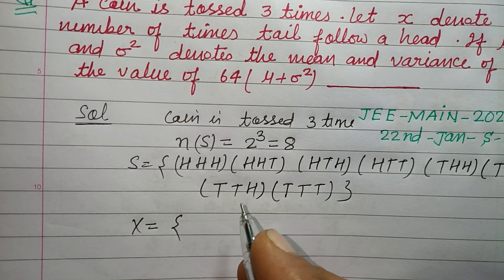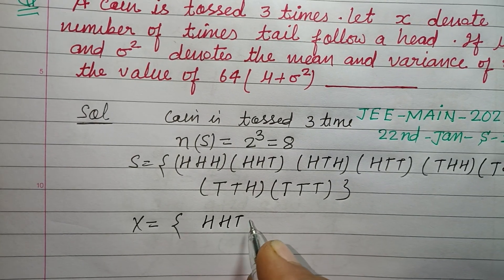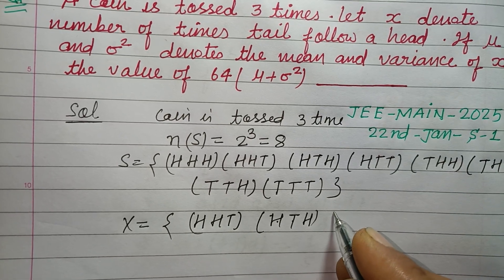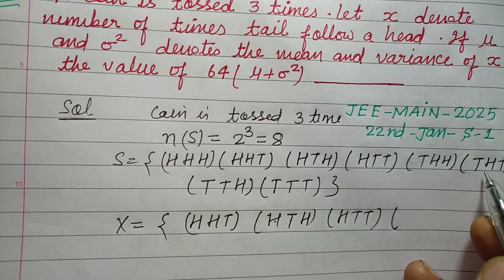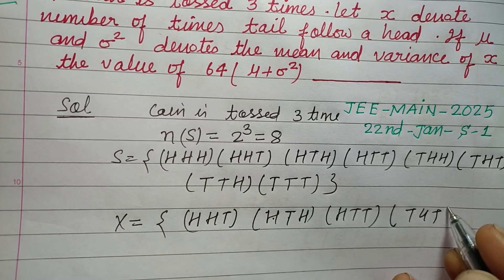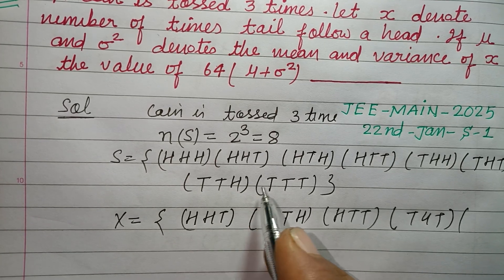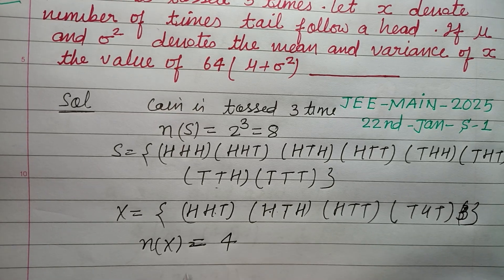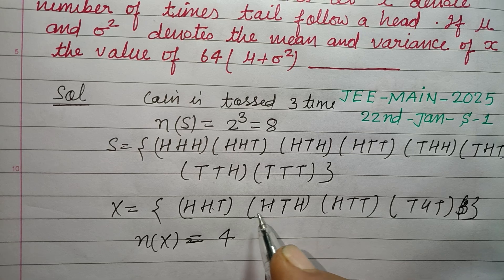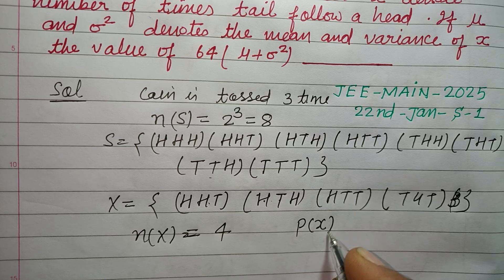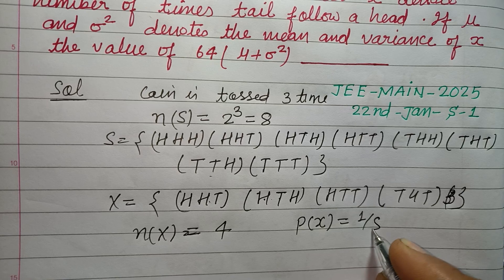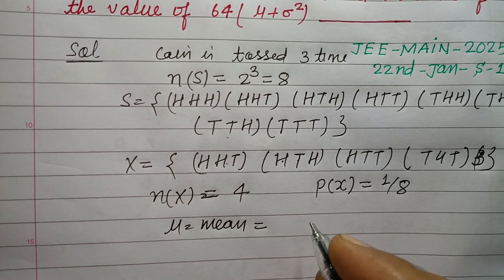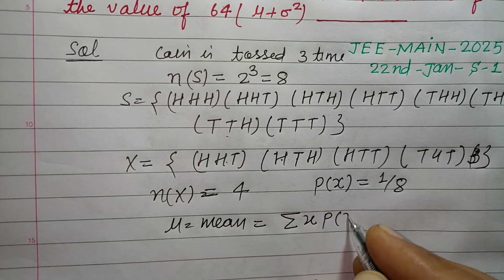X denotes the number of times tail follows a head. Looking at the outcomes, the cases where tail follows head are: HTH, HTT, THH, TTH — so there are 4 such elements. The probability of each is 1/8, and since there are 4 qualifying outcomes, the total count is 4.